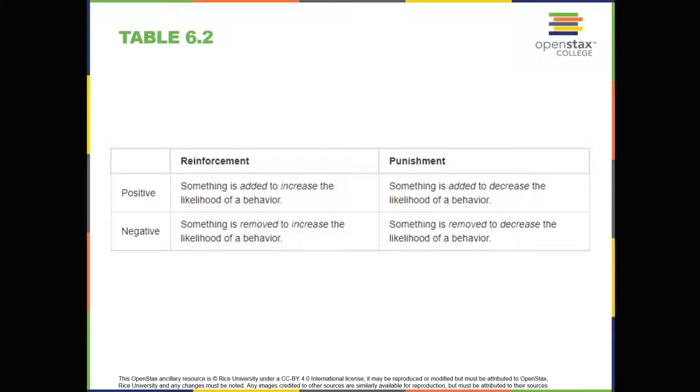In shaping, behaviors are broken down into many small achievable steps. The specific steps used in the process are the following: 1. Reinforce any response that resembles the desired behavior. 2. Then reinforce the response that more closely resembles the desired behavior. You will no longer reinforce the previously reinforced response. 3. Begin to reinforce the response that even more closely resembles the desired behavior. 4. Continue to reinforce closer and closer approximations of the desired behavior. 5. Finally, only reinforce the desired behavior.